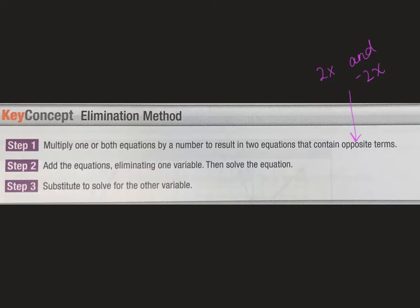Your second step would be to add the equations. You want to eliminate one variable. So again, this is just like that substitution where you want to end up with just one variable in one equation. When you do, it's going to solve the equation for you.